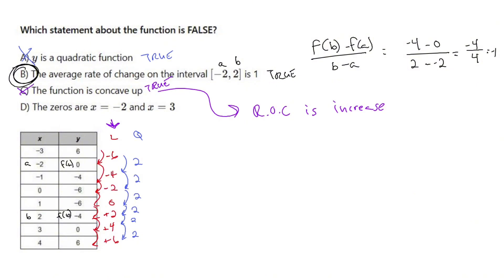Last but not least, let's make sure D is a true statement. The zeros are at negative 2 and 3, which means if I plug in negative 2, do I get 0? Yup. And if I plug in 3, do I get 0? Yup. So the zeros are at negative 2 and 3 — that's true. Which means B was definitely the statement I needed.